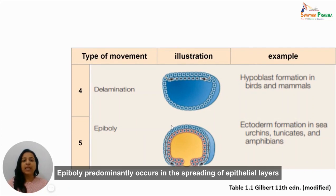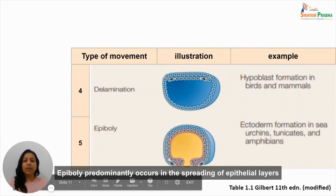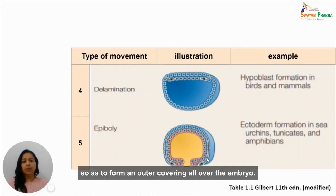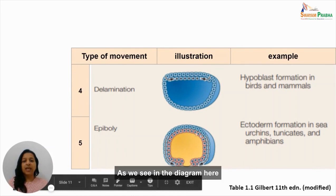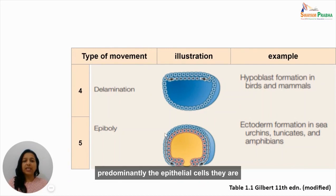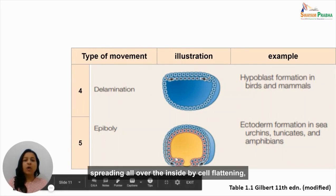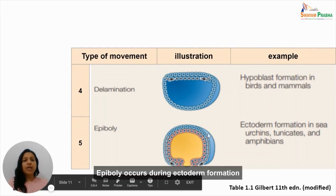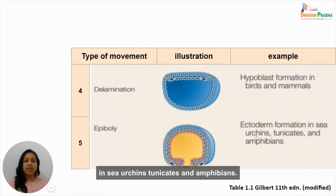The fifth type of gastrulation movement is epiboly. Epiboly predominantly occurs in the spreading of epithelial layers to form an outer covering all over the embryo. As seen in the diagram, the cells present on the outside — predominantly epithelial cells — spread all over by cell flattening, cell division, and also by intercalating several layers of cells into a single layer. Epiboly occurs during ectoderm formation in sea urchins, tunicates, and amphibians.